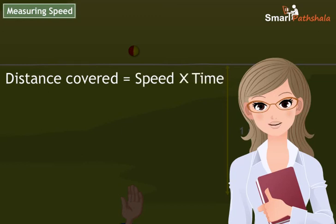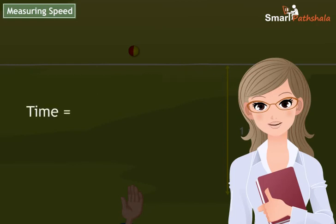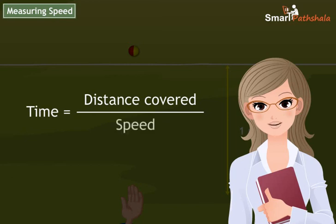We can also find the time an object would take to cover a distance while moving with a given speed. Time is calculated by dividing distance and speed.